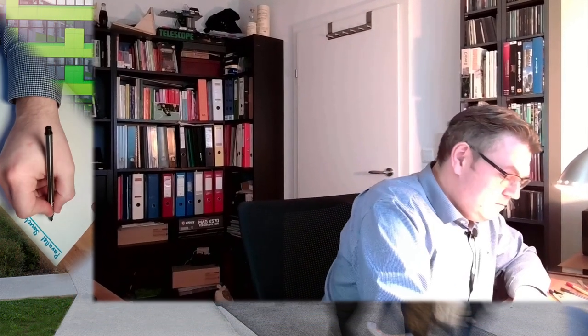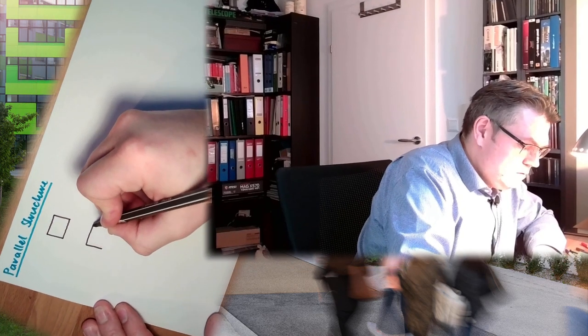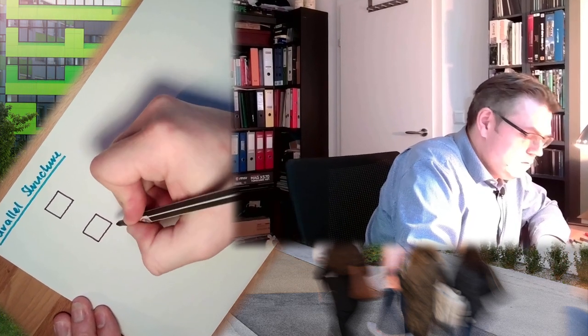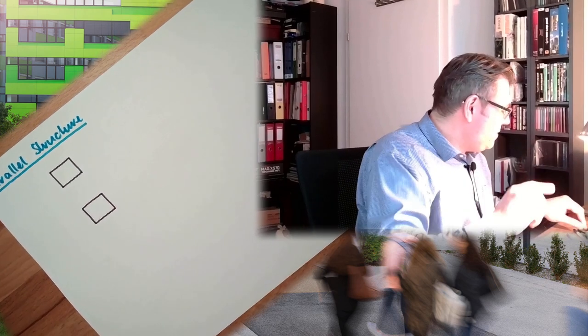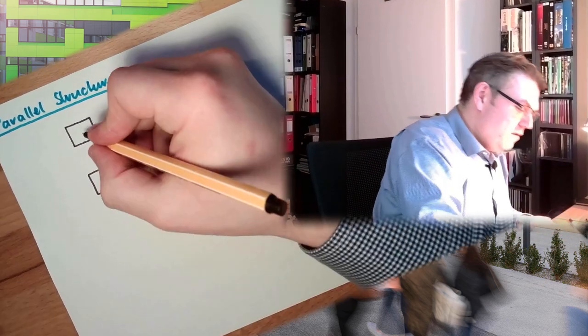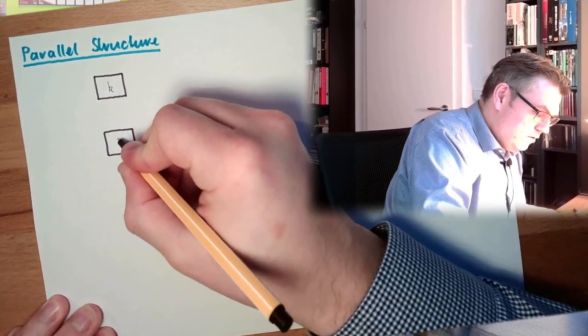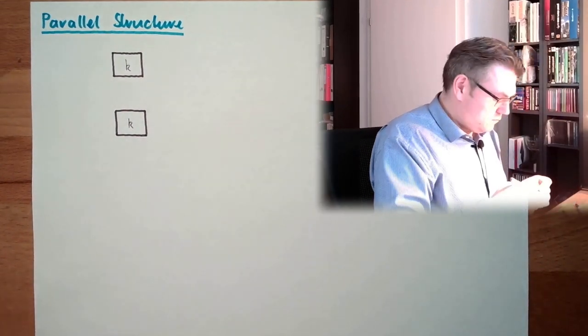The parallel structure. Let me briefly explain what this is. We have two parallel items. Both have the same gain factor k. Here we have gain factor k, and here we also have gain factor k.